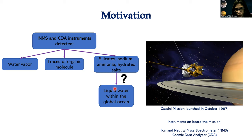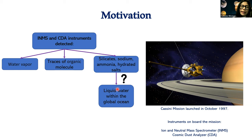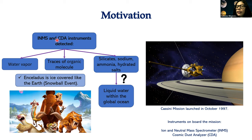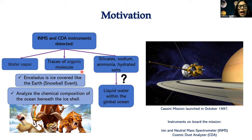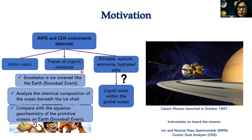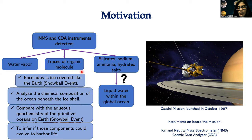The liquid water on Enceladus is not confirmed yet, so I focused on this. To investigate it, I compared the current conditions of Enceladus with the ancient conditions of Earth during the Snowball period. Enceladus is covered in ice like the Earth during the Snowball event, which could generate life in the future — that is the question I would like to solve. I analyzed the chemical composition of the ocean beneath the icy shell and compared it with the aqueous geochemistry of the primitive ocean of Earth during the Snowball event, to infer if conditions could support the origin of life.